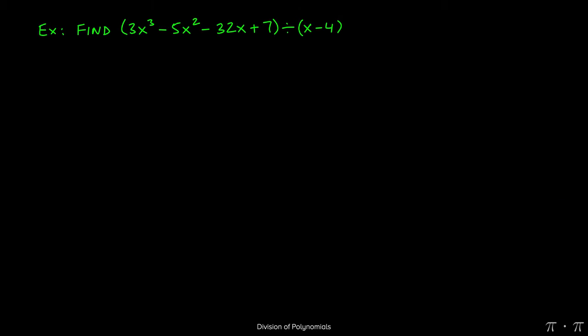Let's say we're asked to find the quotient of 3x cubed minus 5x squared minus 32x plus 7 and x minus 4. Because the denominator, x minus 4, is not a monomial, we have to resort to long division.